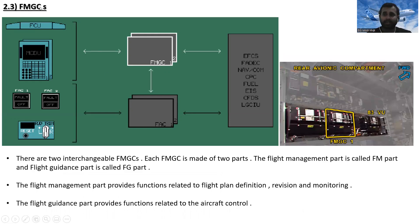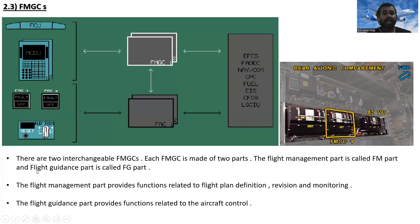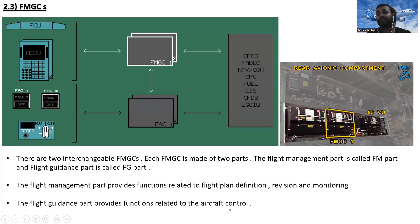You can see the real flight control panel, the second flight control panel, and the rudder trim control panel. There are two interchangeable flight management and guidance computers (FMGCs). Each FMGC is made up of two parts: the flight management part, called the FM part, and the flight guidance part, called the FG part. The FM part provides functions related to flight plan definition, revision, and monitoring, while the FG part provides functions relative to aircraft control.